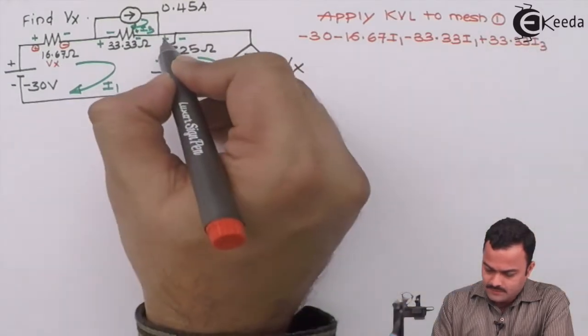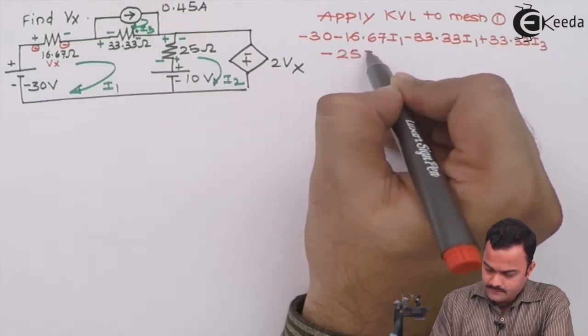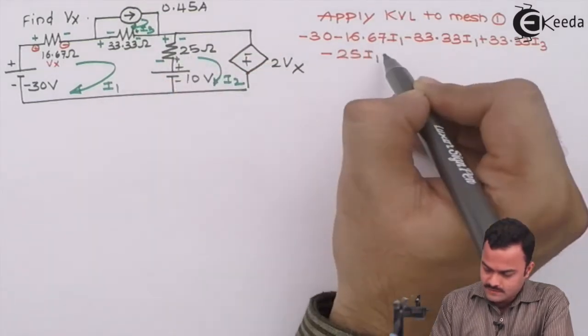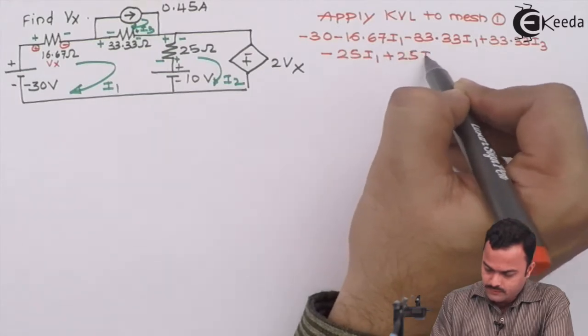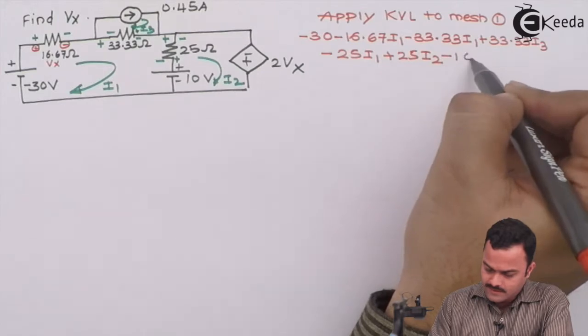Plus minus, minus 25i1, minus plus, plus 25i2 because of current 2, plus minus, minus 10, equal to zero.